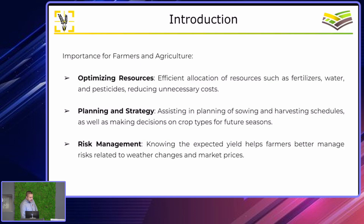If we look at why this is important for farmers and agriculture — it can optimize resources, aid in planning and strategy, and help with risk management. For optimizing resources, it enables efficient allocation of fertilizers, water, and pesticides, reducing unnecessary costs. In planning and strategy, you can plan sowing and harvesting schedules.